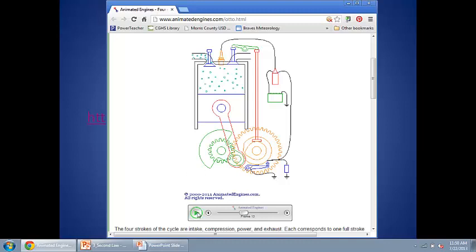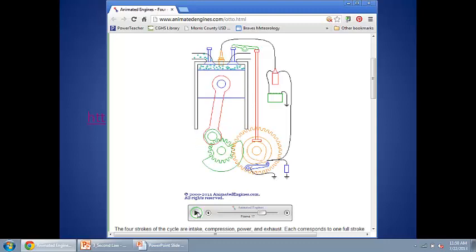The second stage is known as the compression stroke. It is called a compression stroke because the piston is pushed back up into the cylinder causing the gas inside the cylinder to compress. So you can see all of these little particles here that are now all compressed together. You also know that when you compress a gas, it increases the temperature of that gas.